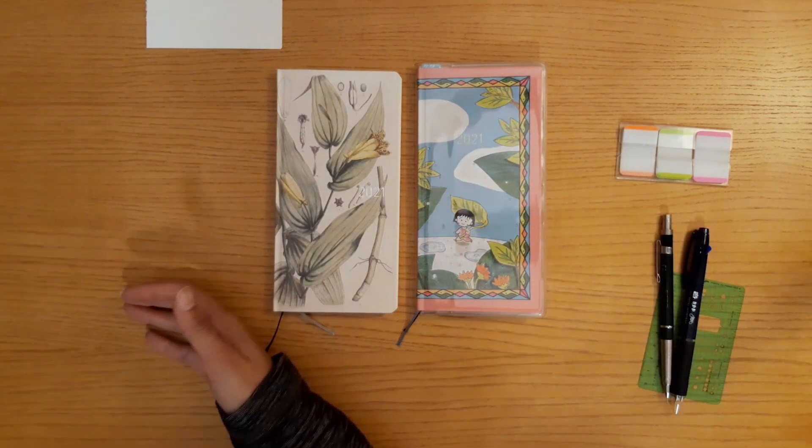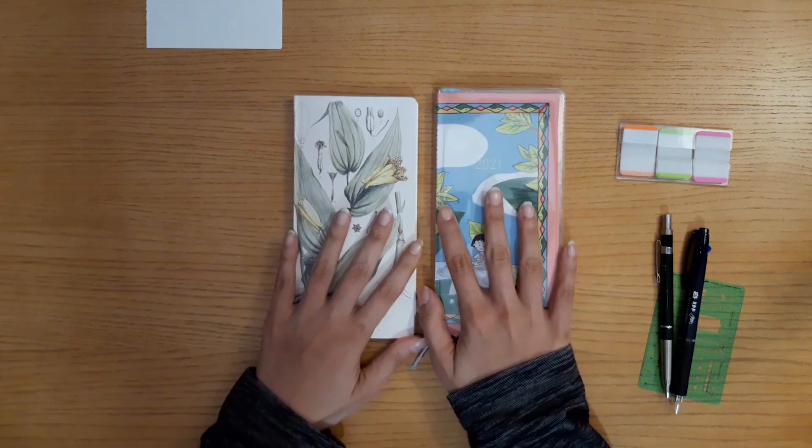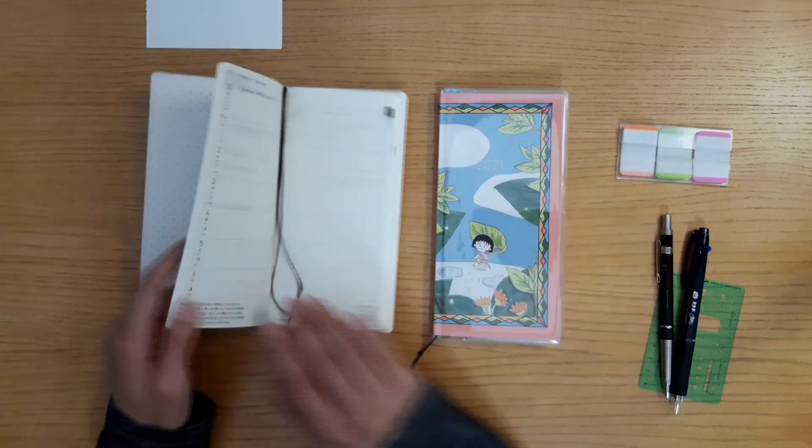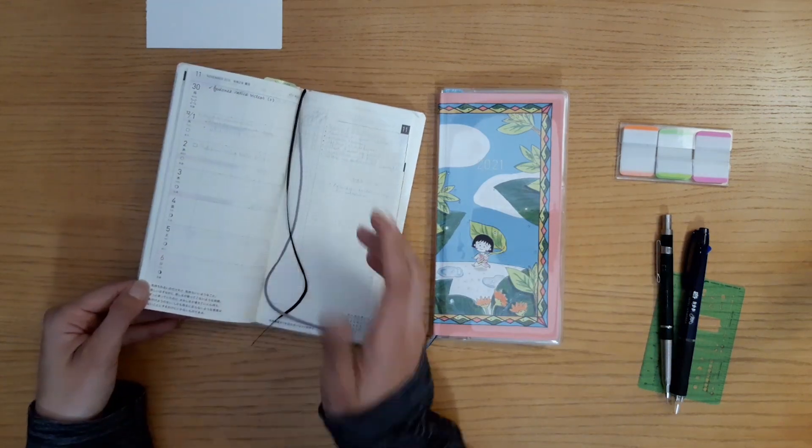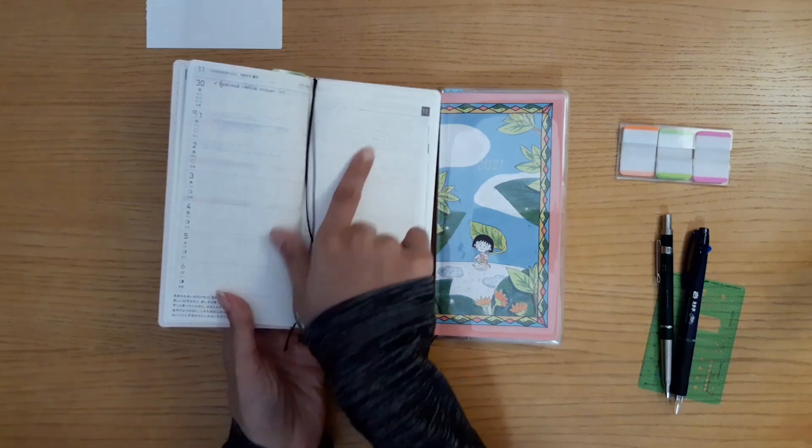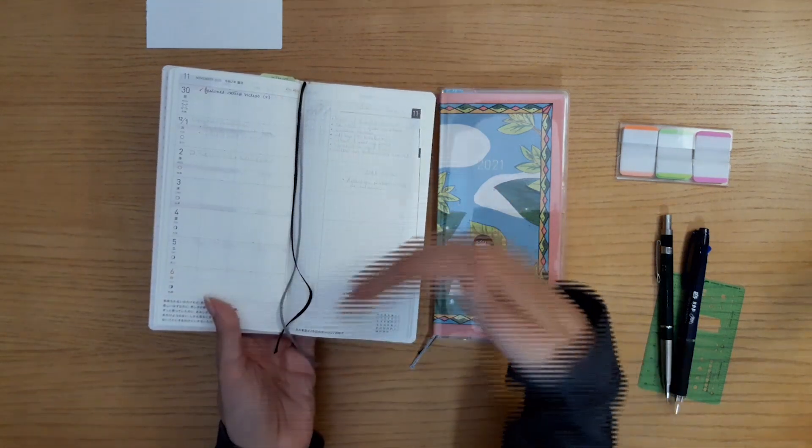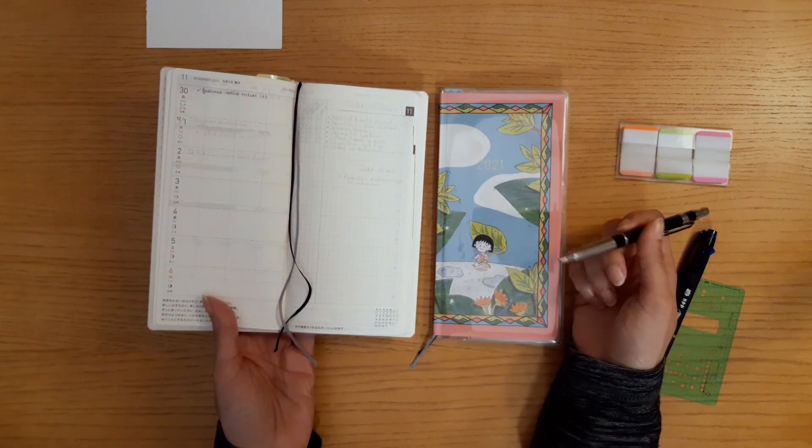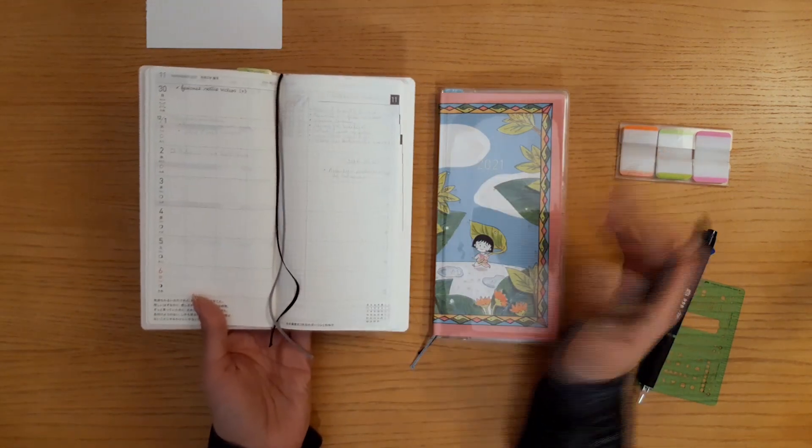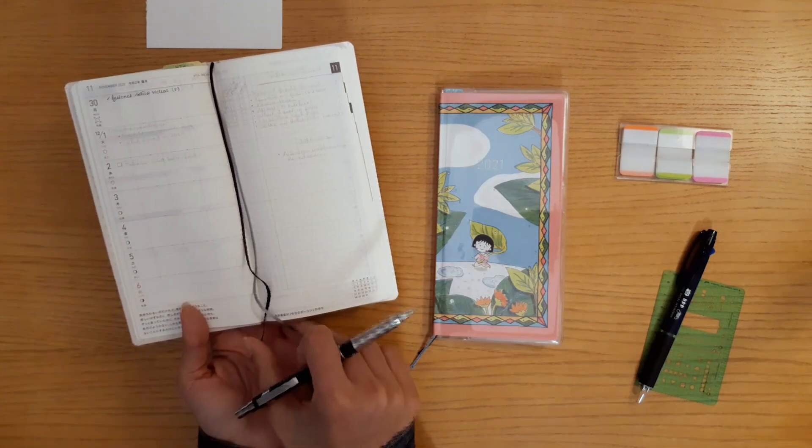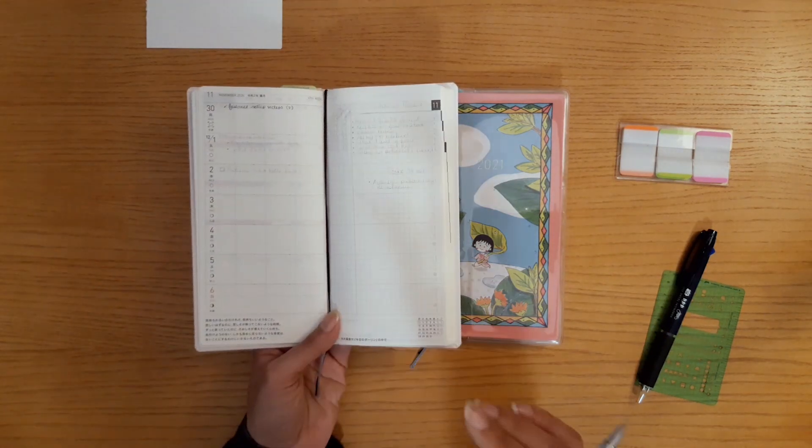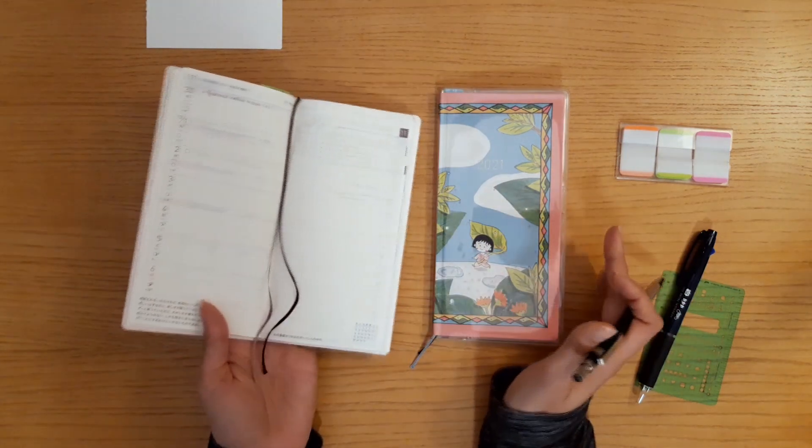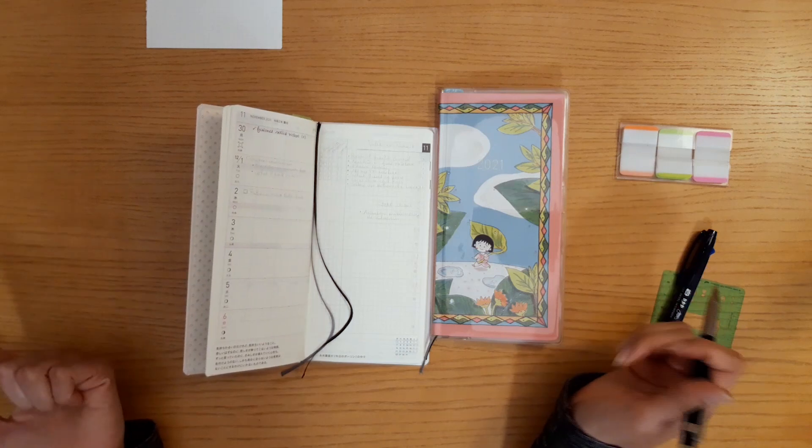In this video you're going to join me as I set up these two planners for next year. Well, not just next year - I'm actually going to start using them this week because they start this week. As you can see, I laid out with pencil how I want to set them up. I always try out with pencil how I want to use them. I find that taking the moment and the time to do that makes my planning process more efficient.